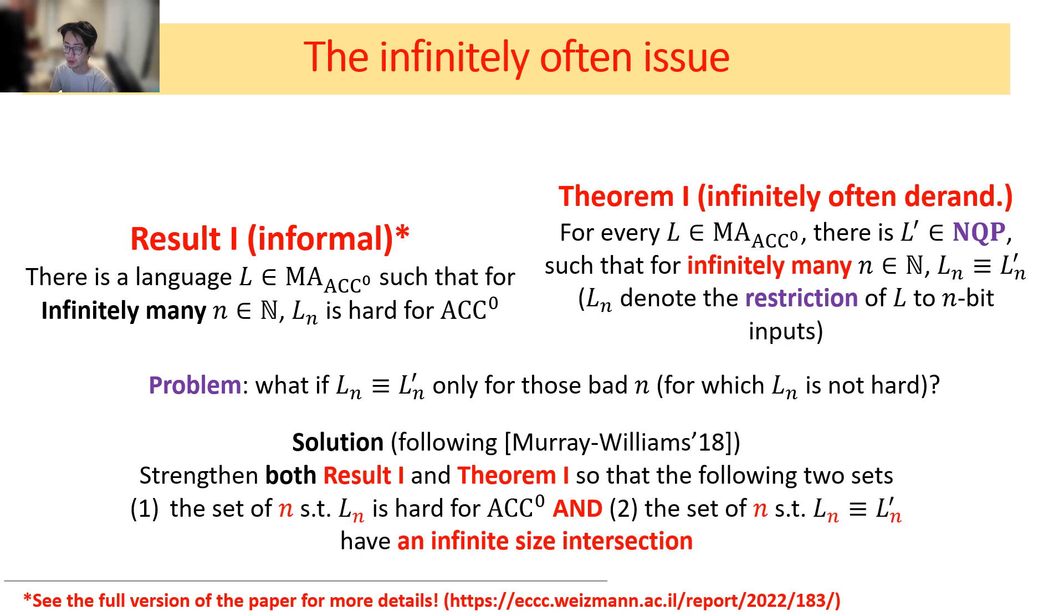So how do we resolve this issue? We'll use ideas from Murray and Williams. What we'll do is strengthen both result 1 and theorem 1 so that the two relevant sets—the first set is all the input lengths such that L is hard for ACC^0 from result 1, and the second set is all the input lengths such that L and L' agree on—we'll strengthen both results so that these two sets have an infinite size intersection. And if we can guarantee that, then L' is going to agree with L on infinitely many input lengths where L is actually hard against ACC^0. So L' is going to be hard against ACC^0 as well. See the full version of this paper for more detail.